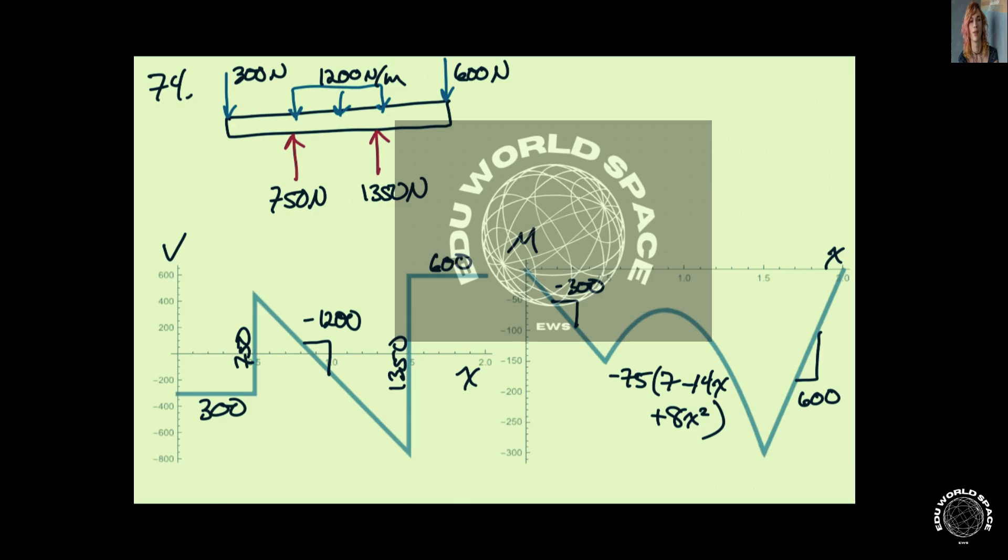Now, if we place this with equivalent point load, do force and moment balances for the entire structure, we'll figure out that the support on the left is supporting 750 newtons, and that on the right is supporting 1,350 newtons.